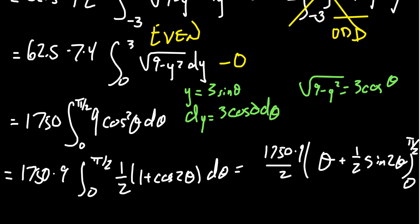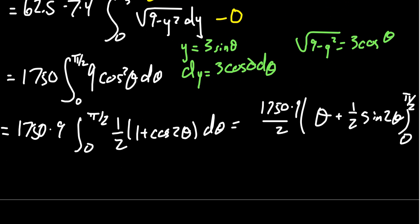This goes from 0 to pi halves. When you plug in 0, theta will be 0, sine of 0 is 0, so it's going to disappear. When you plug in pi halves, there will be a pi halves from the theta. And then sine of 2 pi halves, which is sine of pi, which is 0. So everything's going to vanish except 1750 times 9 times pi halves.